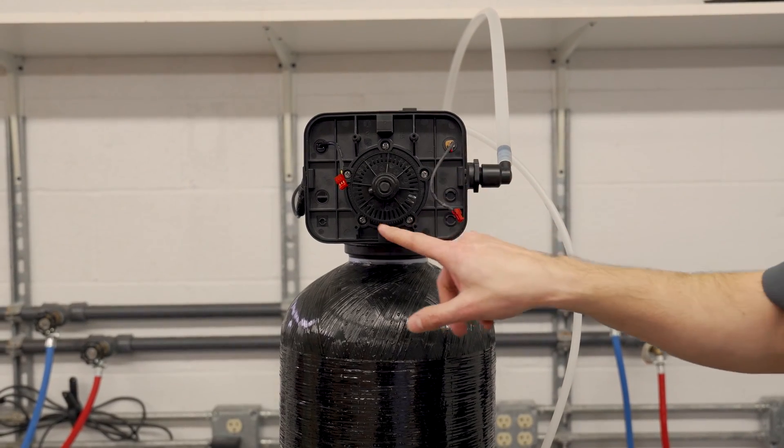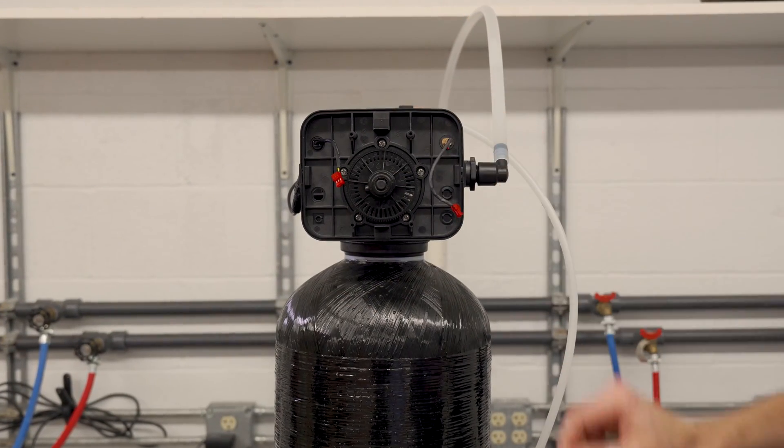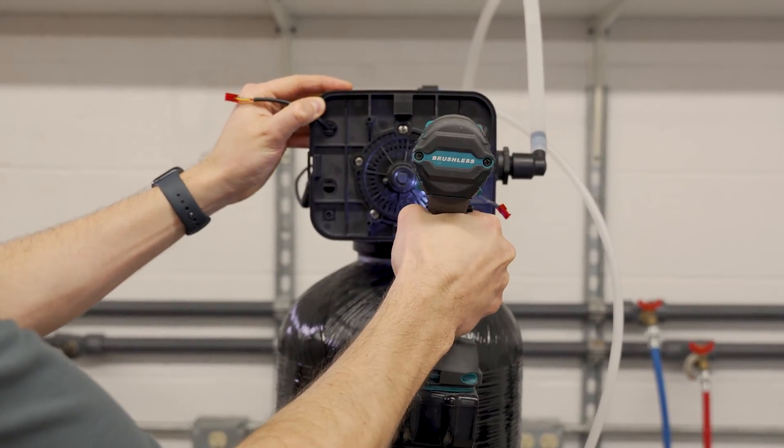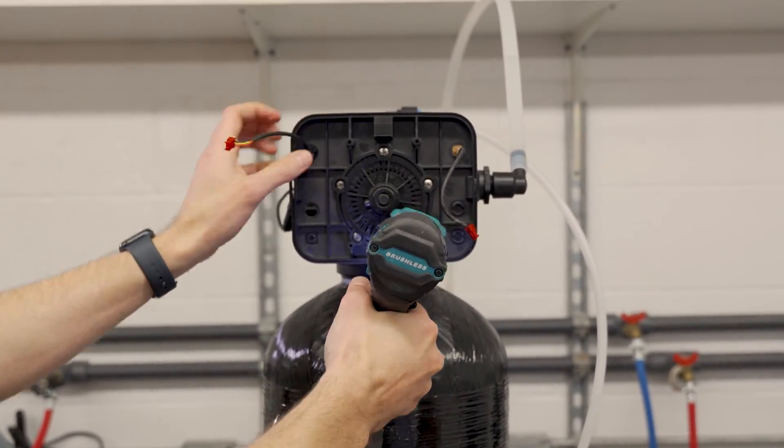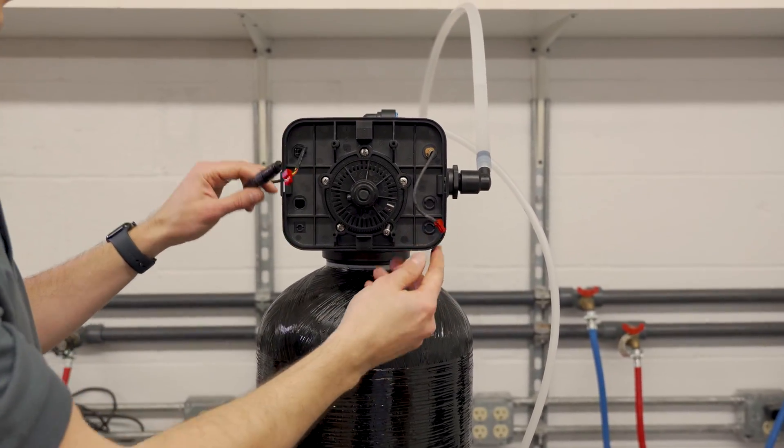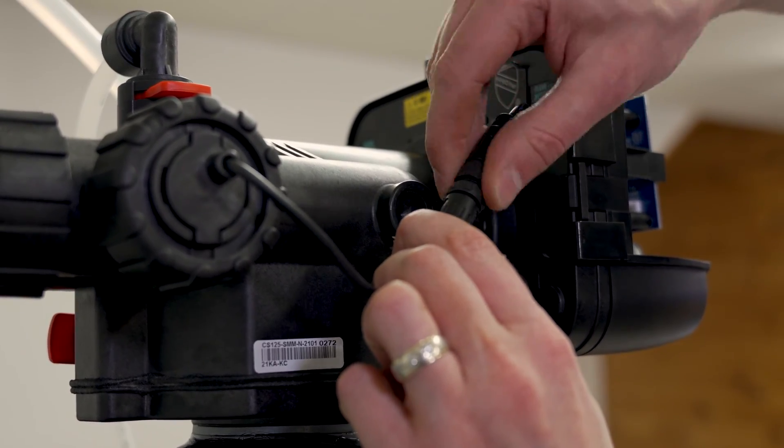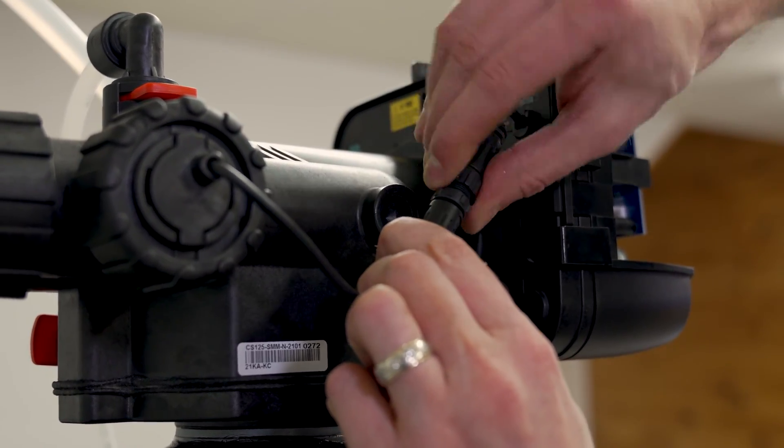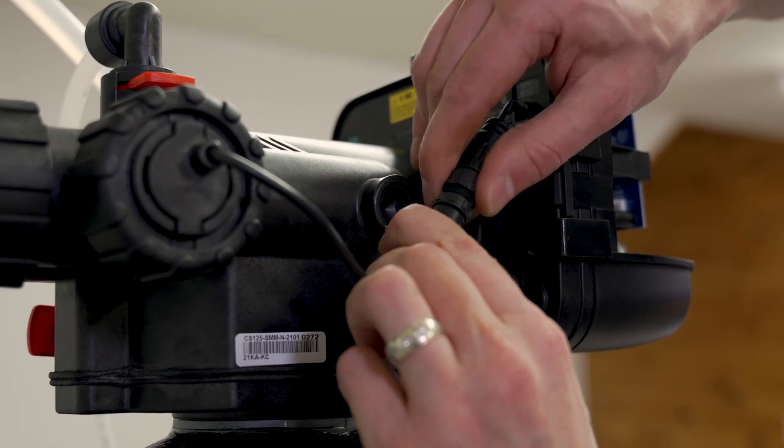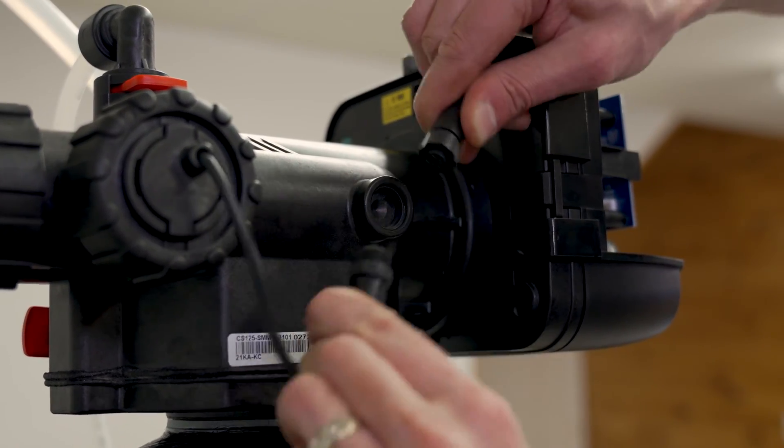Now we're ready to remove the screws that hold the back plate onto the valve body. Before we remove this back plate, you'll also need to disconnect the meter cable from this connector that runs between the back plate and the meter.